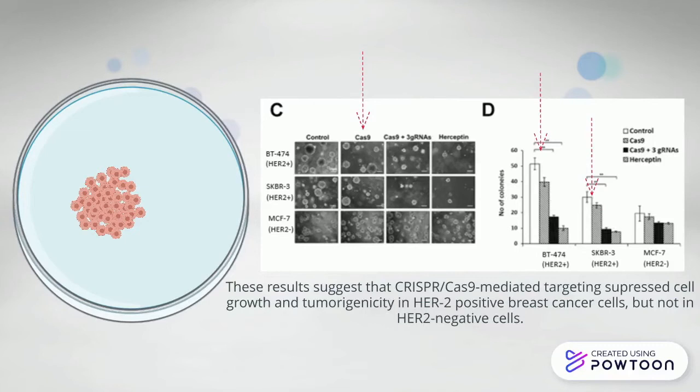reduced in Cas9-plus-3-guide RNA colonies and HER17 colonies compared to just Cas9 or control in HER2-positive cells. These results suggest that CRISPR-Cas9 mediated targeting suppressed cell growth and tumorigenicity in HER2-positive breast cancer cells, but not in HER2-negative cells.